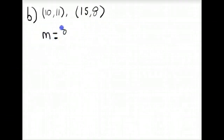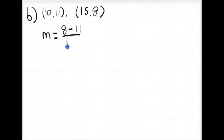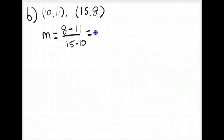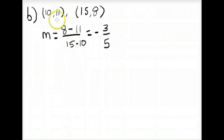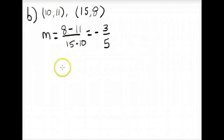To find the slope we use the definition of slope: M equals (8 minus 11) over (15 minus 10), which gives negative 3 fifths. We already have two points, so we can write the equation in point-slope form using either point. We'll use the first point, (10, 11).